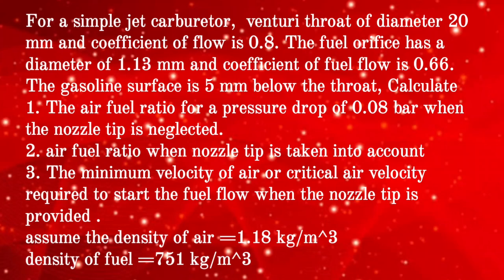Given question: for a simple jet carburetor, the venturi throat has a diameter of 20 mm and coefficient of flow is 0.8. The fuel orifice has a diameter of 1.13 mm and coefficient of fuel flow is 0.66. The gasoline surface is 5 mm below the throat. Calculate the air-fuel ratio for a pressure drop of 0.08 bar when the nozzle tip is neglected; the air-fuel ratio when the nozzle tip is taken into account; and the minimum or critical air velocity required to start fuel flow when the nozzle tip is provided. Assume density of air = 1.18 kg/m³ and density of fuel = 751 kg/m³.